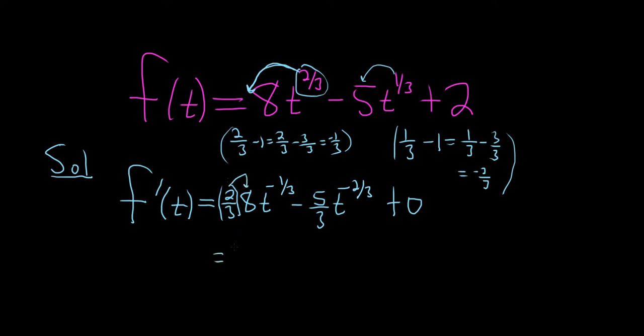So 2 times 8 is 16 so you get 16 thirds t to the negative 1 third and then we have minus 5 thirds t to the negative 2 thirds. And let's just leave it like this.